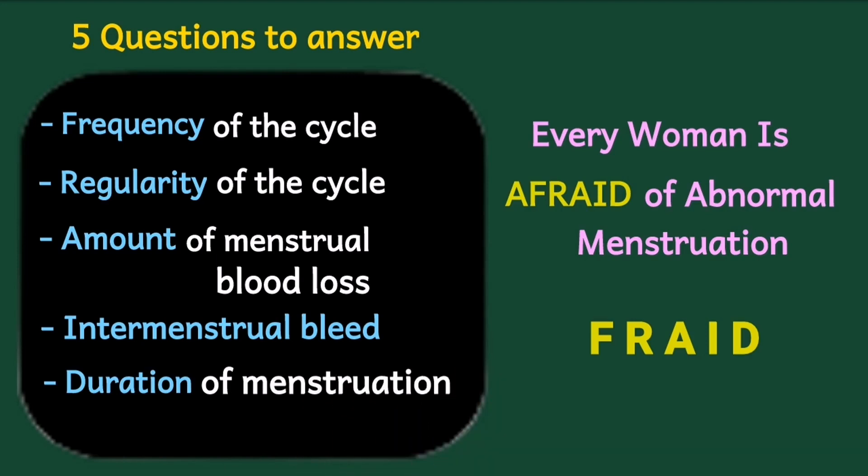After answering these questions, a normal menstruation is one which has a normal frequency, occurs regularly, has an amount that is neither too little nor excessive, has no intermenstrual bleeding, and one in which the duration of blood loss is not excessively long. Let's take a few minutes to understand each of these questions.